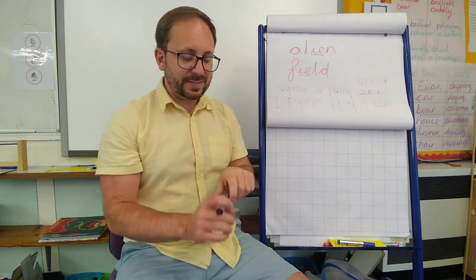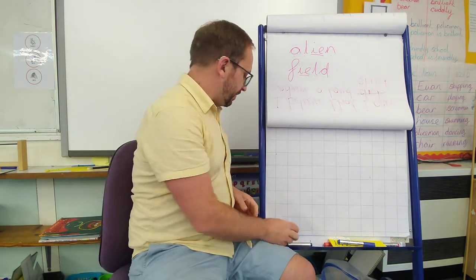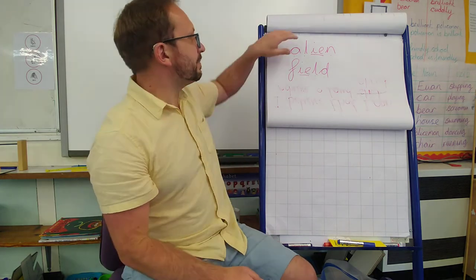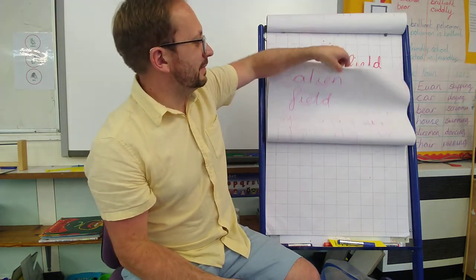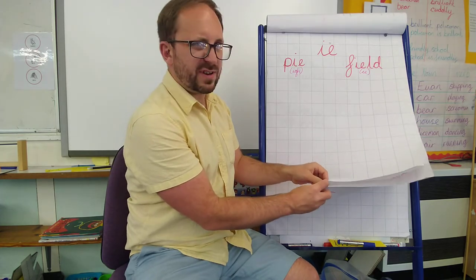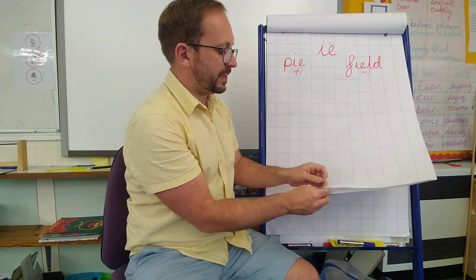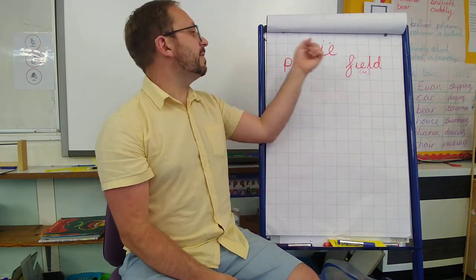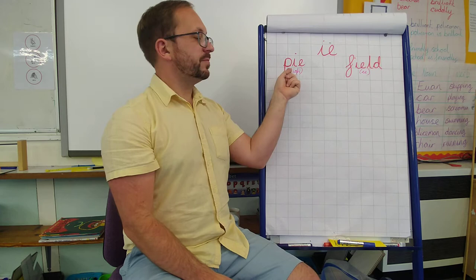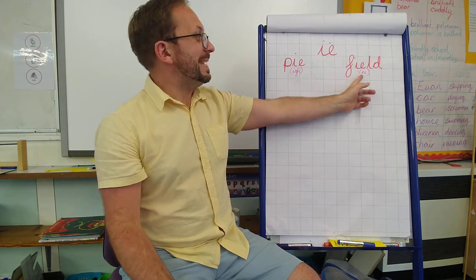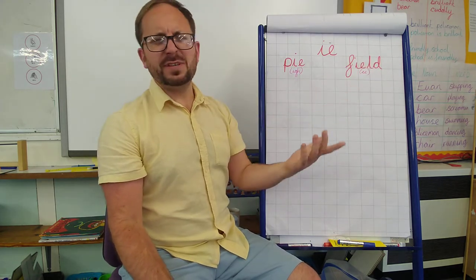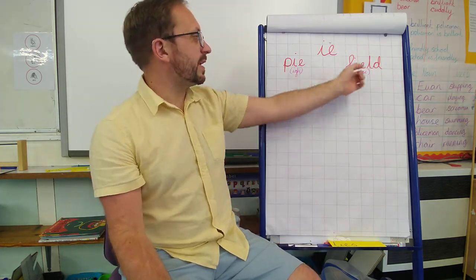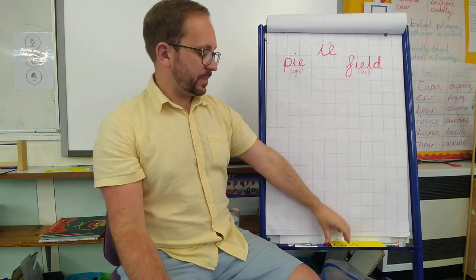So, we're going to be looking at this, but first what I've got right here. I'm going to grab some Blu-Tac quickly because I need it for this bit. So, with our IE, we can say it like I as in pie, or E as in field — confusing the English language. So what we're going to do, I'm going to show you some words. You need to tell me whether they go in the I or the E.